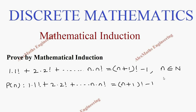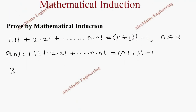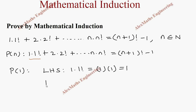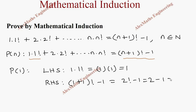As the first part, we take P of 1. For the left hand side when it is P of 1, it is only the first term: 1 into 1 factorial. Since 1 factorial is 1, that gives 1 into 1 which is 1. For the right hand side, substituting n equals 1 gives 1 plus 1 factorial minus 1, which is 2 factorial minus 1. Since 2 factorial is 2, we get 2 minus 1 equals 1. So LHS equals RHS, therefore P of 1 is true.